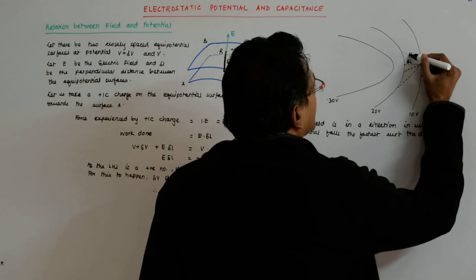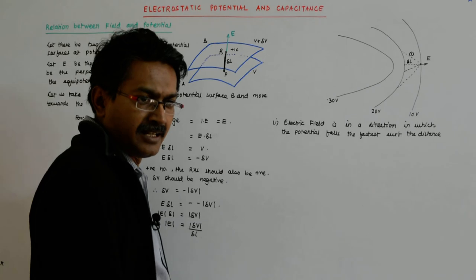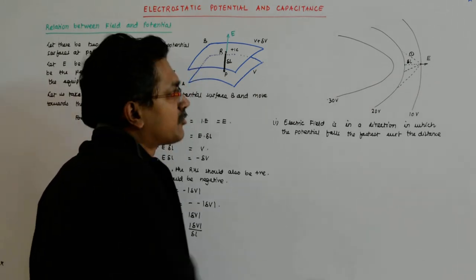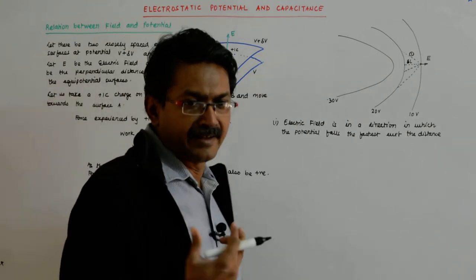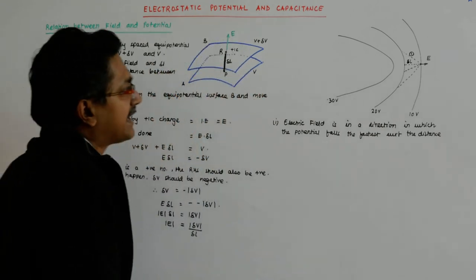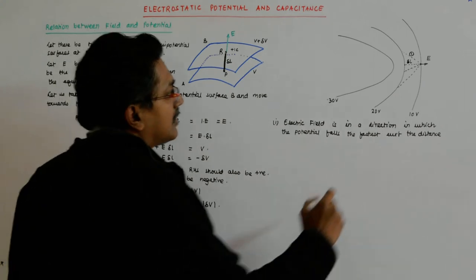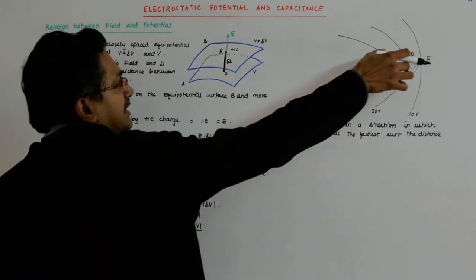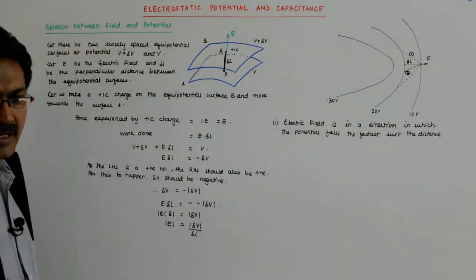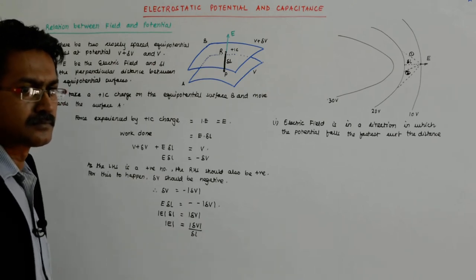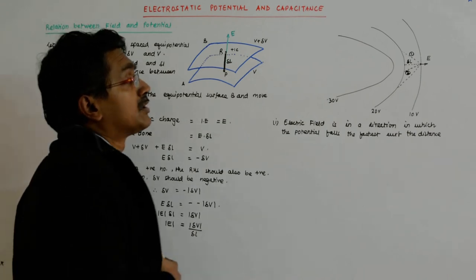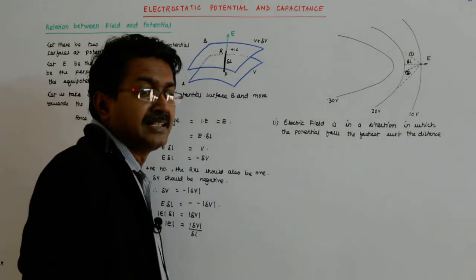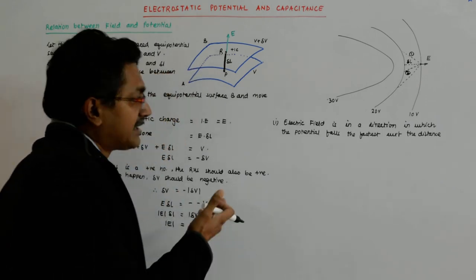If I go through path one, del V is the same — del V is 20 minus 10, that is 10. But the length of the path is more than del L, so the potential gradient with respect to the distance is lesser in path one. In path two, del V is the same, but this length is less, so the potential gradient is higher than for path one. So that path along which del V upon del L is the maximum is because del L is the minimum.